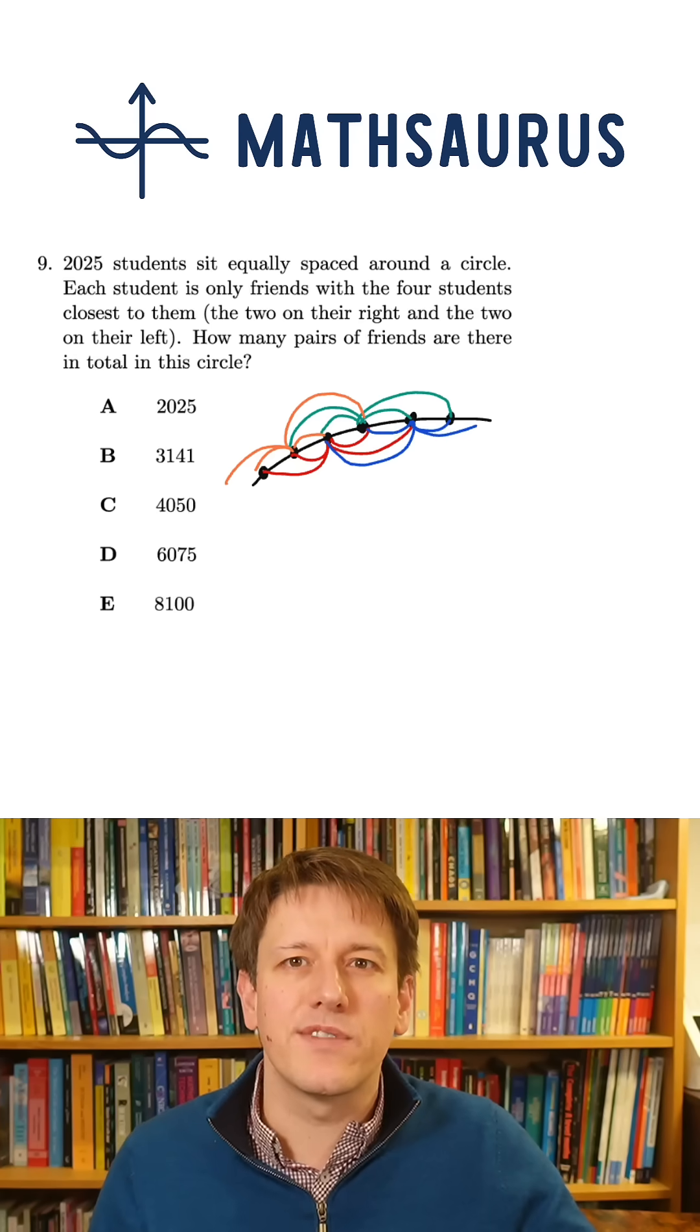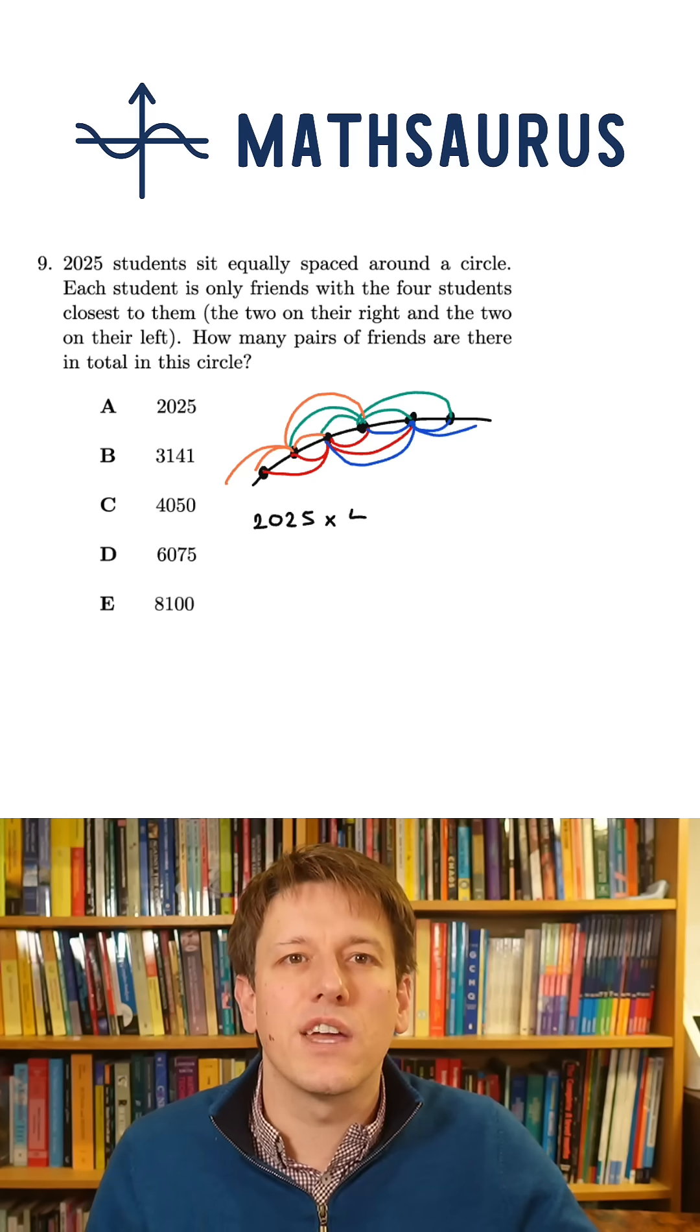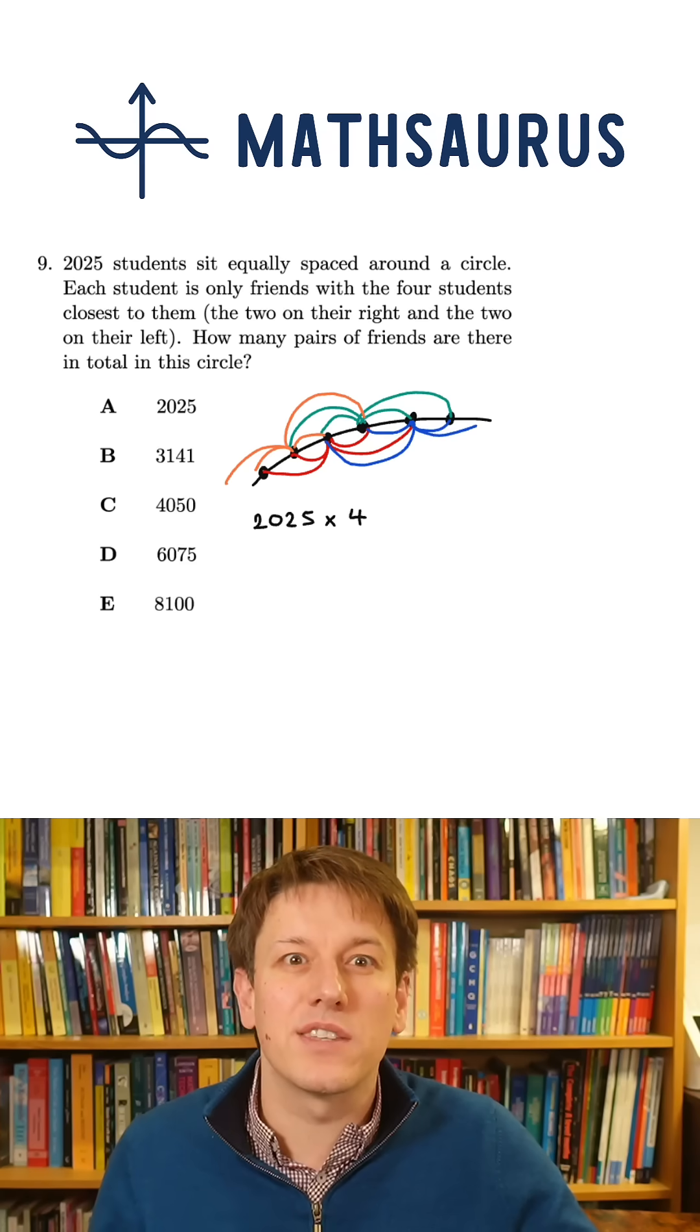Because if I go through all 2025 people and do this, in total I'm going to have drawn 2025 times four lines, because I'm adding four friendships for each person that I consider.